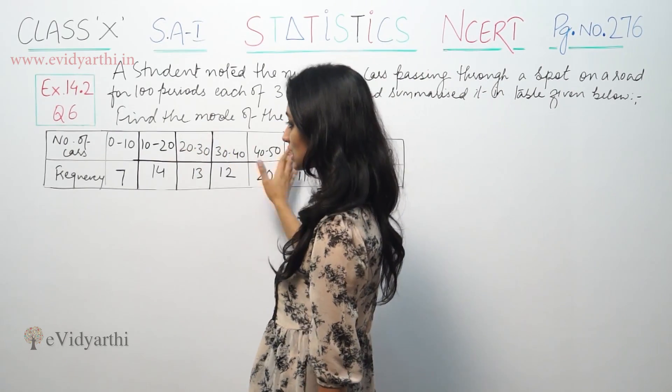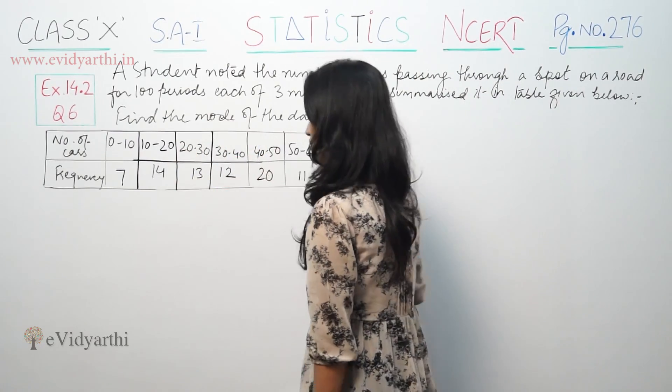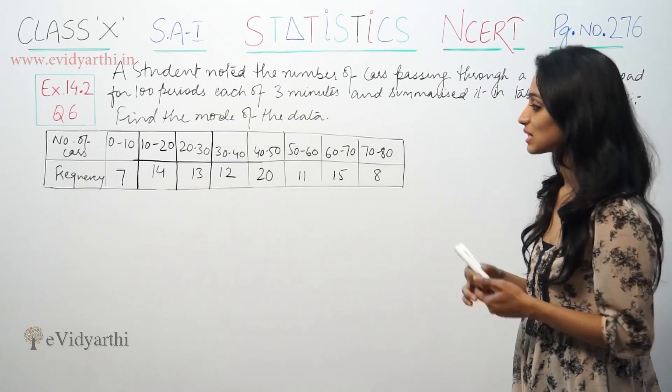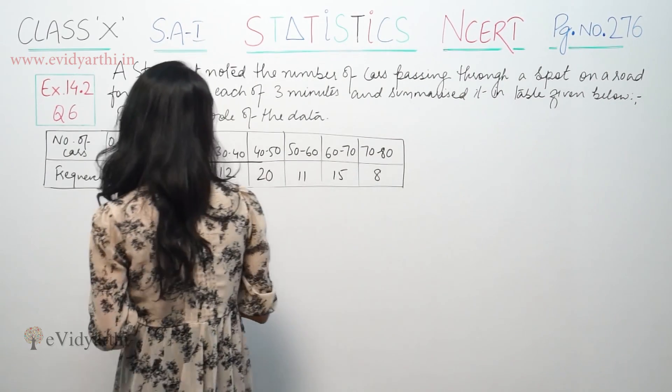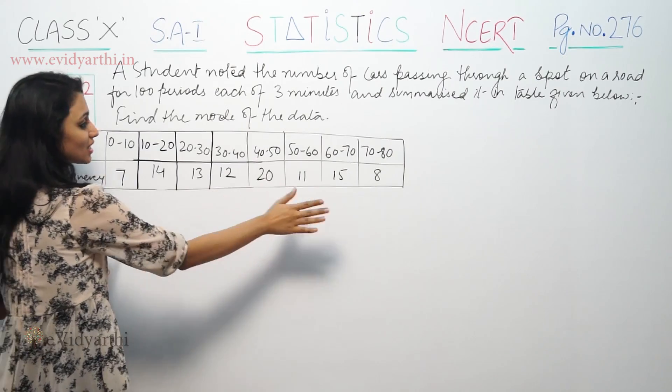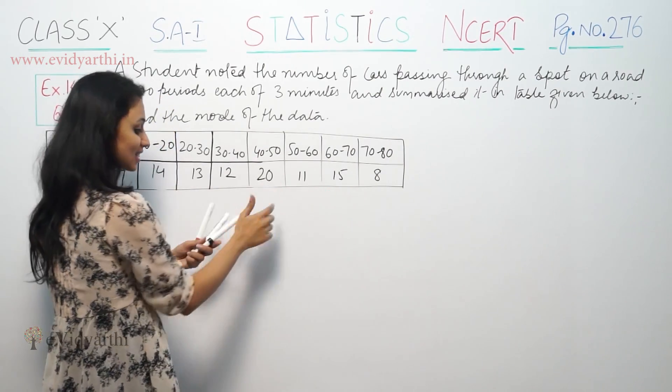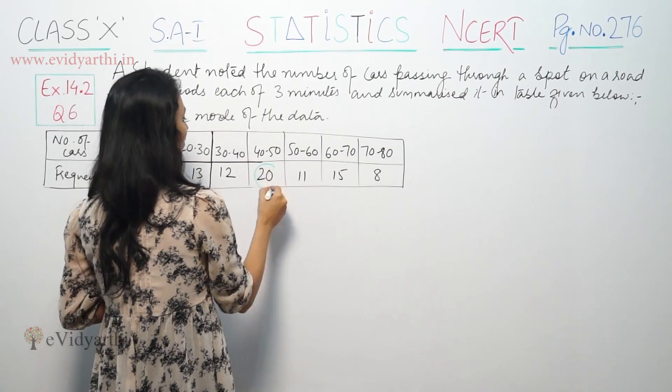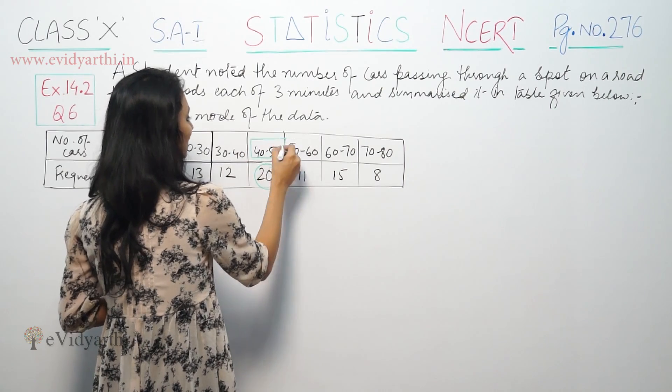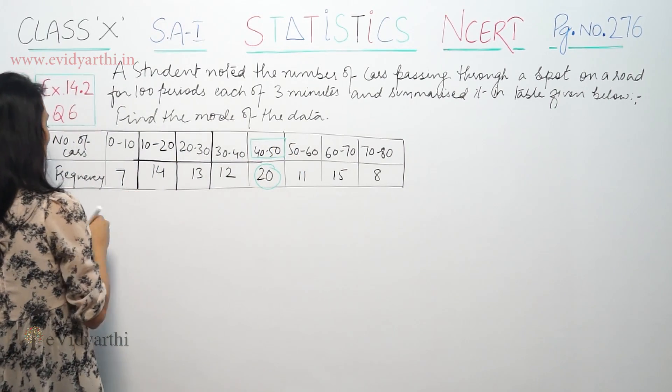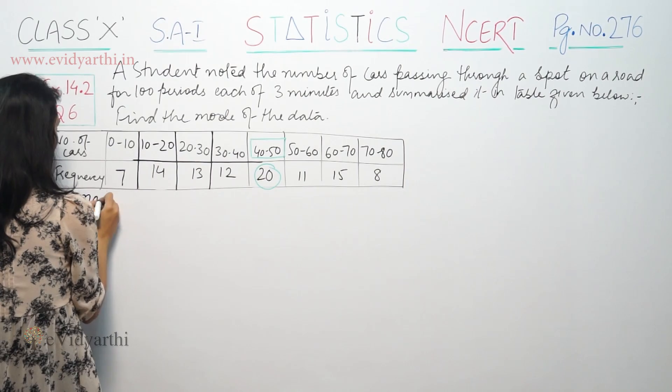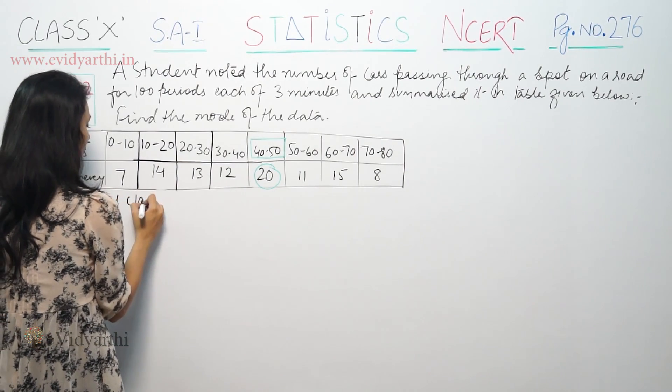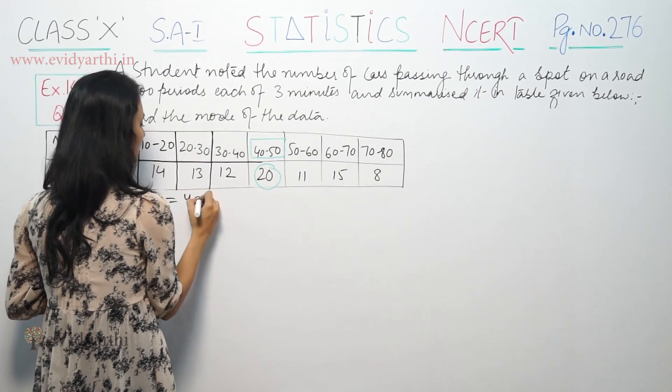I am going to tell you the number of cars and the frequency. For the mode of the data, let's see the frequency. The highest frequency is this 20. So this is my modal class.